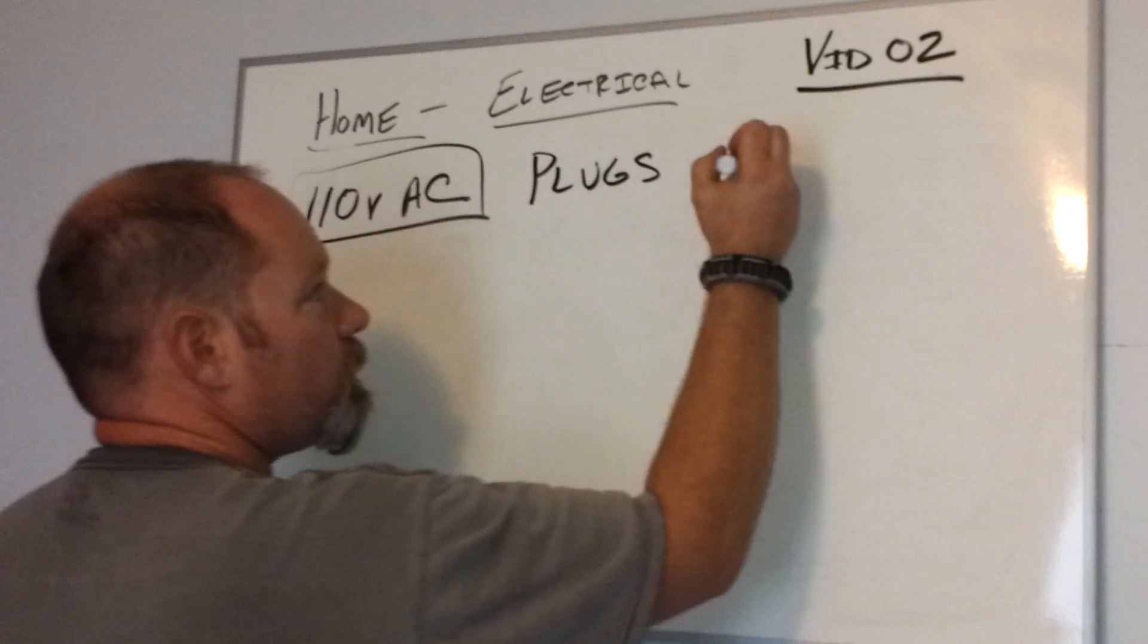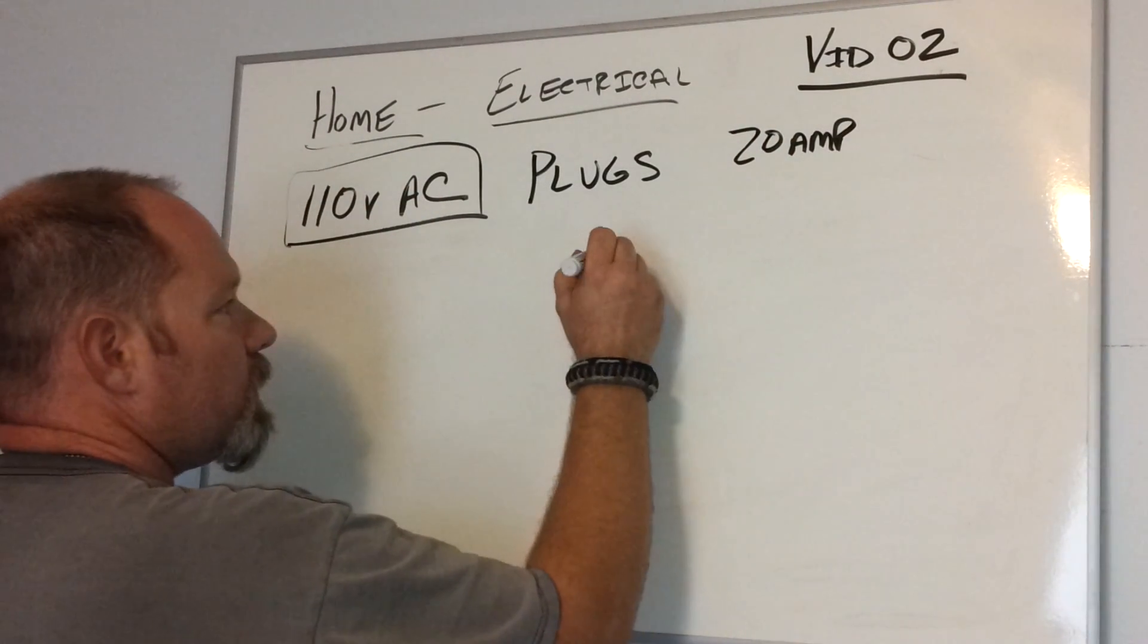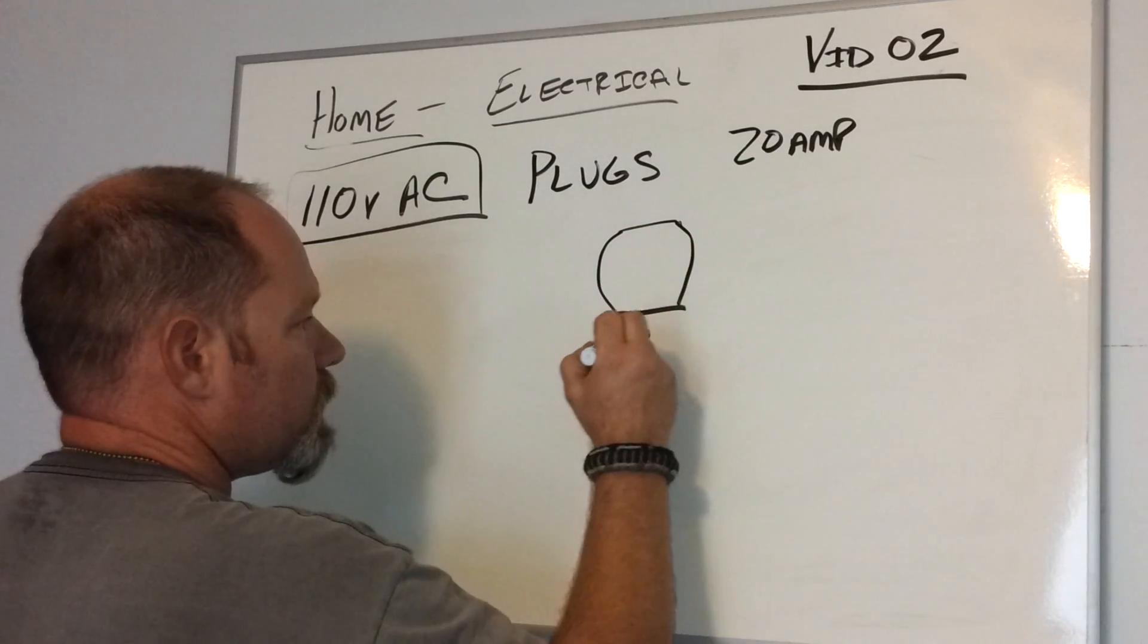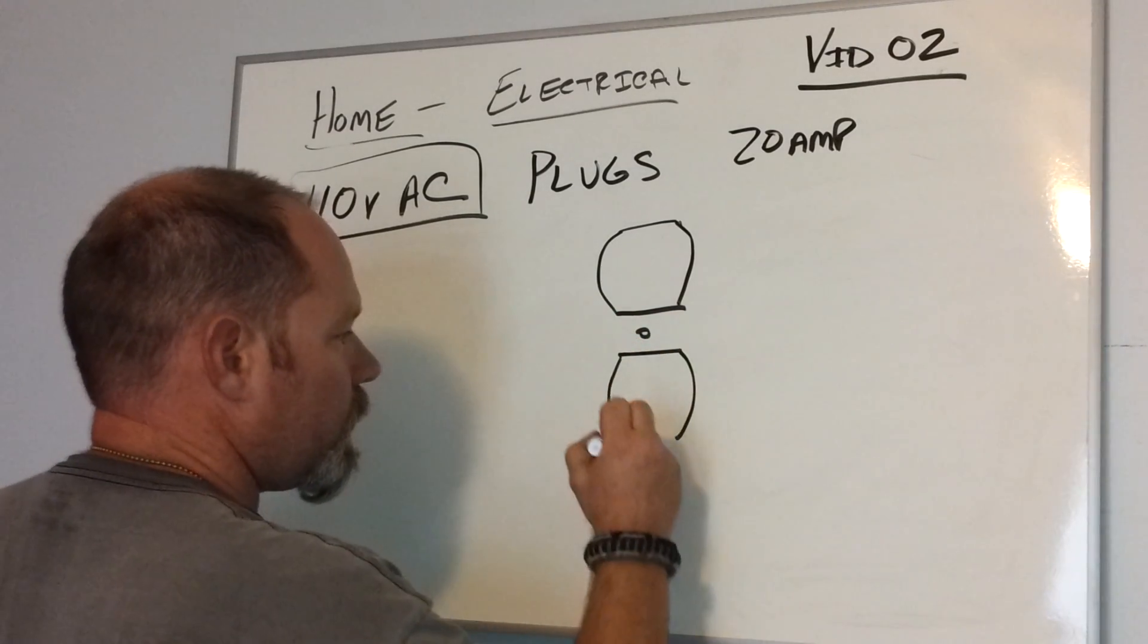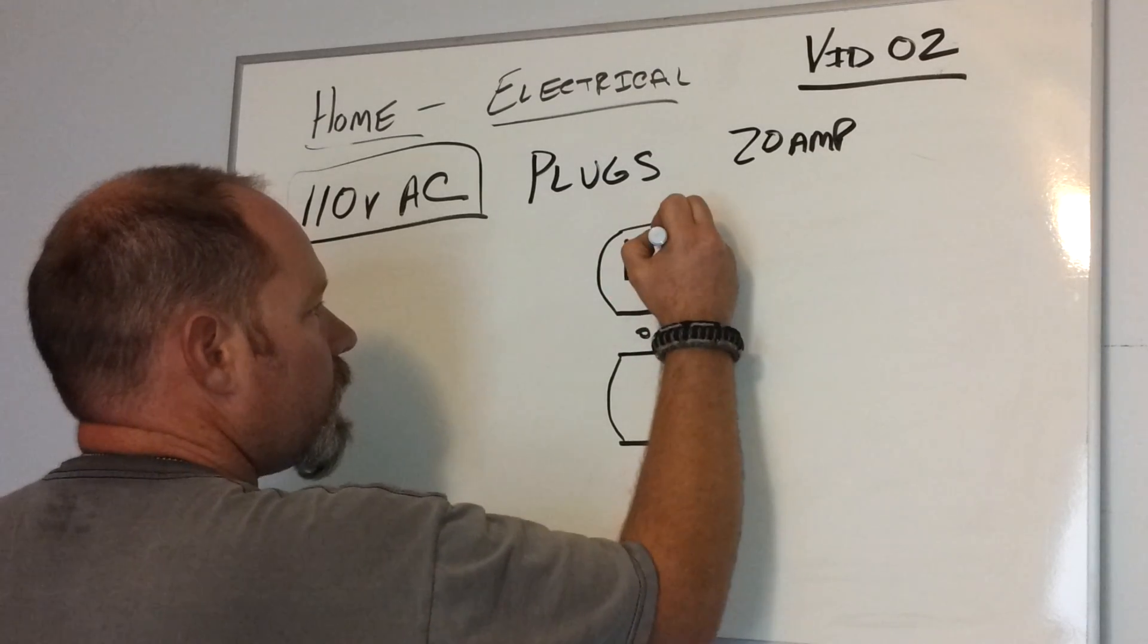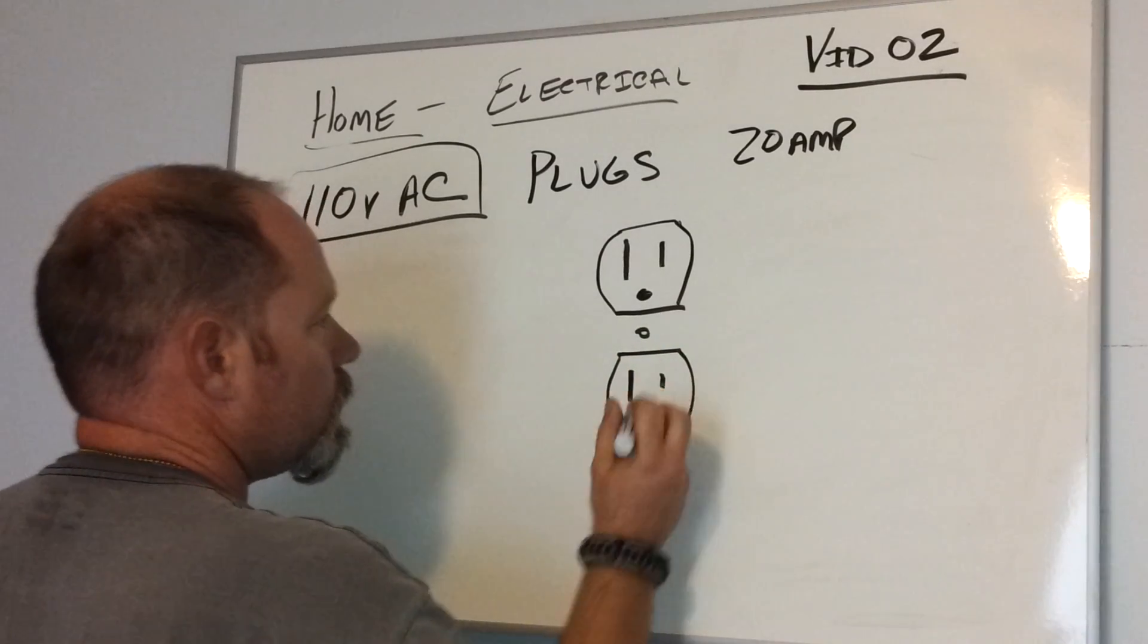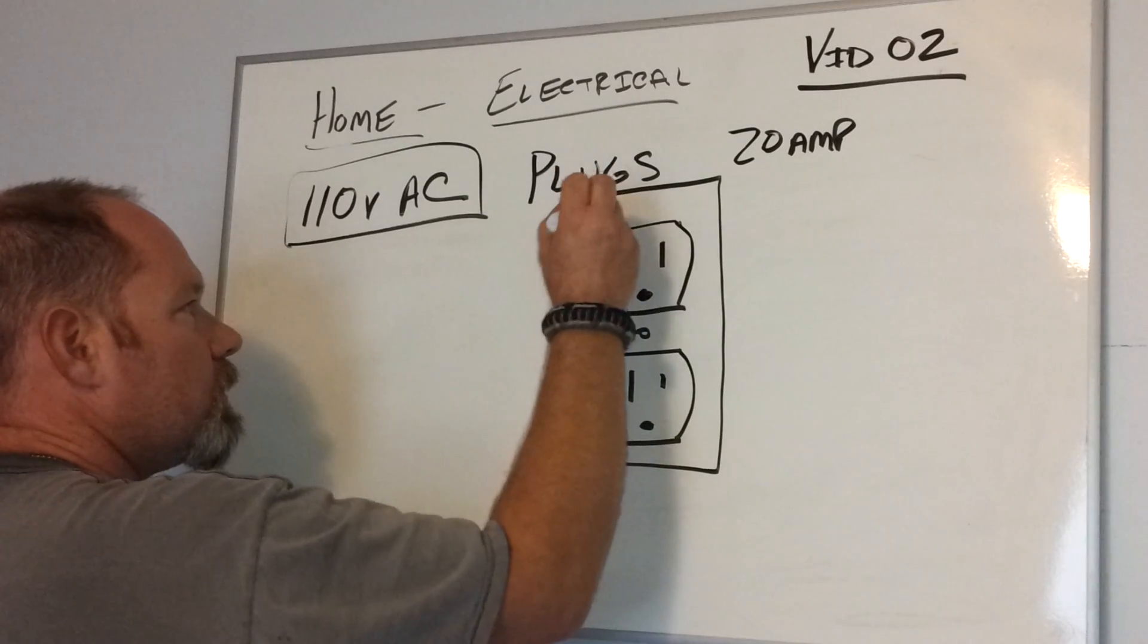Typically, plugs are run on 20-amp circuits. When you look at a duplex plug—pardon my drawing, but I'll do the best I can with the artwork here—you're going to have a long slot and a short slot, and then you're going to have your ground plug. Long, short, ground. This is how they should be.